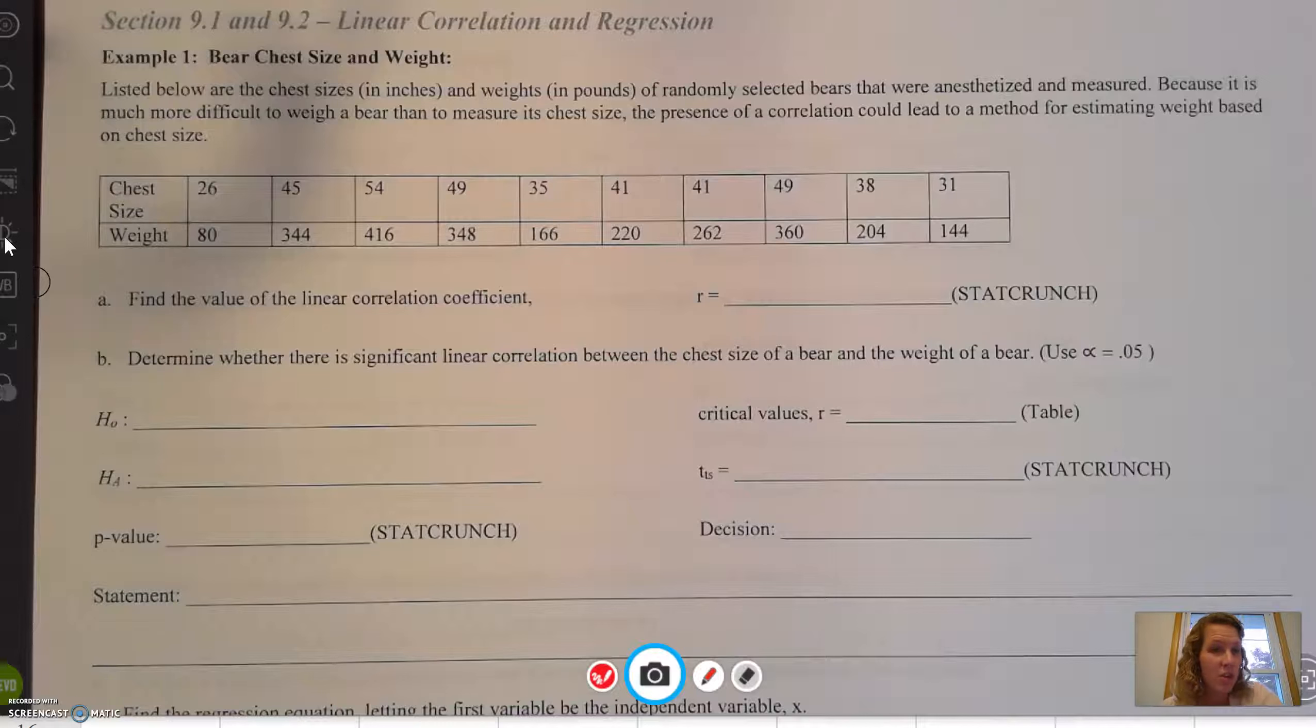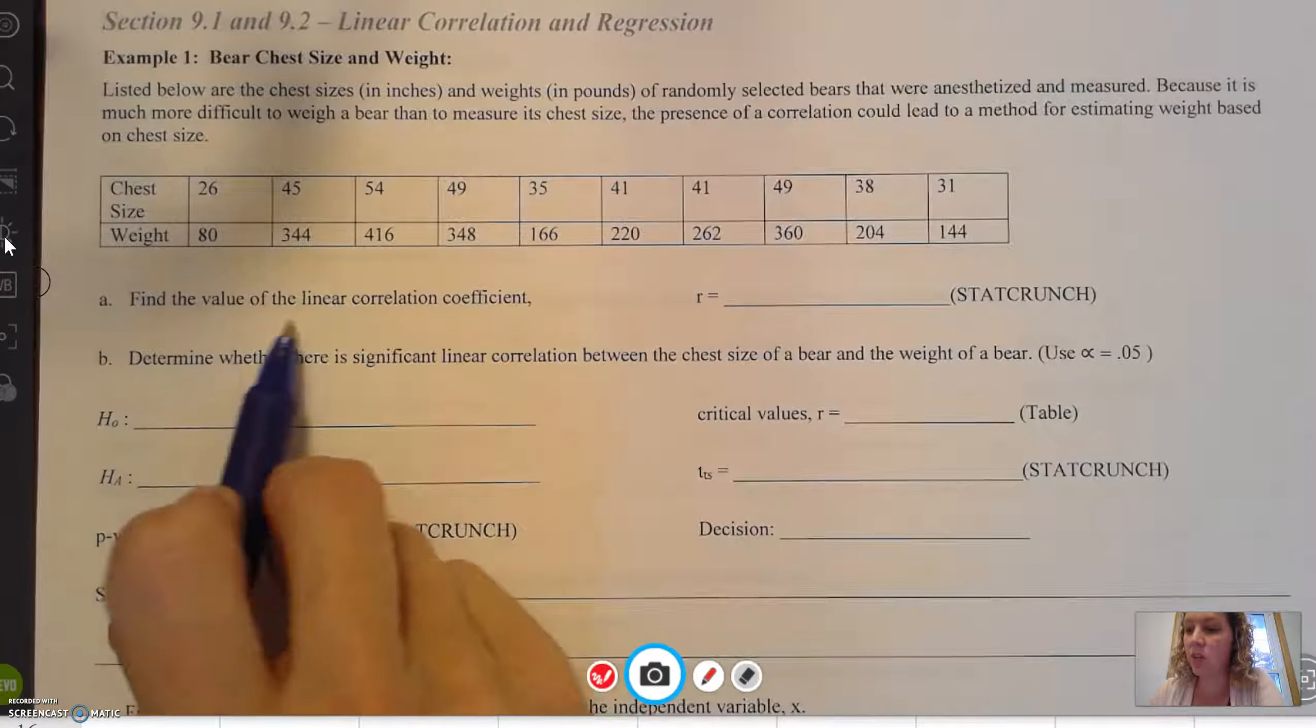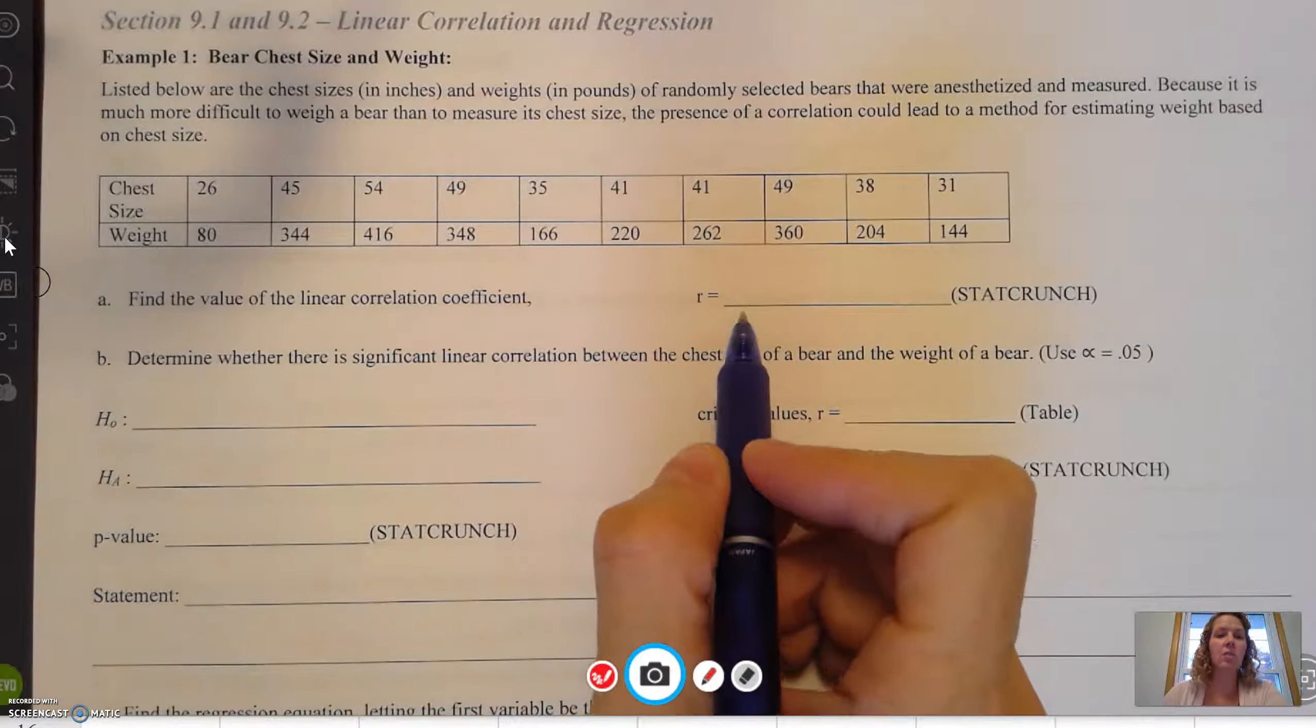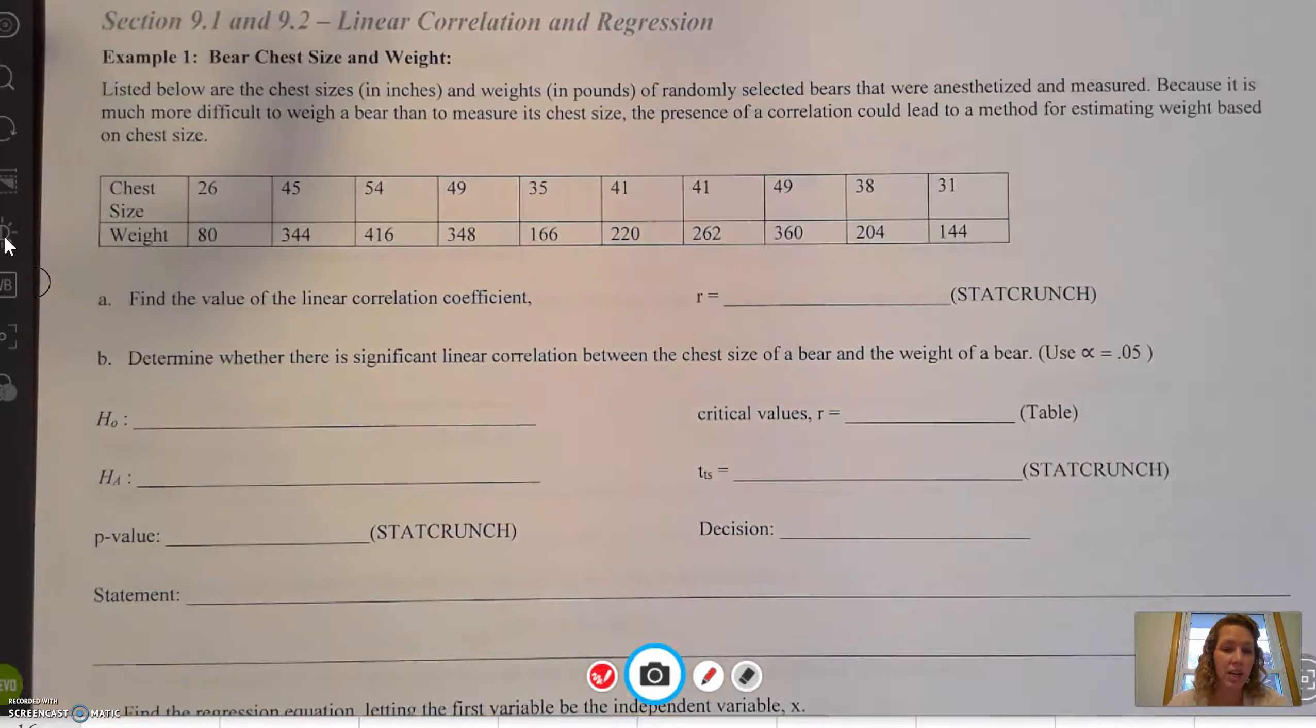For example, you can weigh bears if they're in the zoo, but it's hard to measure a bear in the middle of the woods. So if there's a correlation, you can put the bear to sleep, measure around its chest, and then find a predicted weight. The first thing we're going to do is find the value of the linear correlation coefficient r. We're going to type all the data into StatCrunch and perform some calculations.